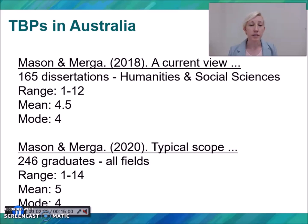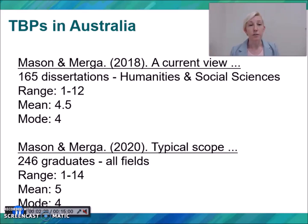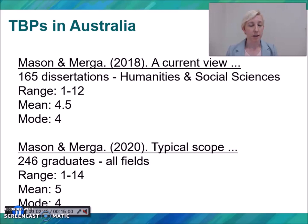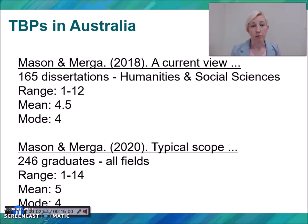Several years later, we engaged in quite a large mixed method study where we surveyed recent graduates who had successfully completed a TBP across all fields — again focused on Australia. From those 246 participants, they shared information about their thesis, and we found that they included anything from 1 up to 14 outputs, with a mean of 5 and a mode again of 4.